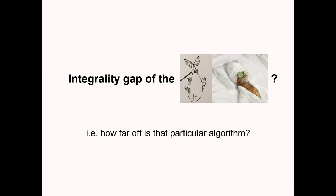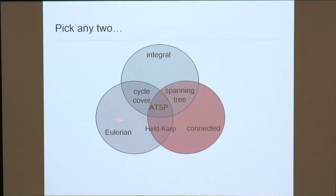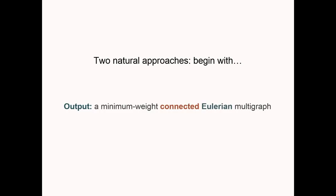Besides the approximation ratio, we're also interested in how far the LP solution itself is from optimal — the integrality gap. In ATSP, the hardness combines three things: you need an Eulerian, connected, integral multigraph. Any two of these is polynomial — solving the Held-Karp relaxation, finding a cycle cover, or finding a spanning tree — but the combination is NP-hard.